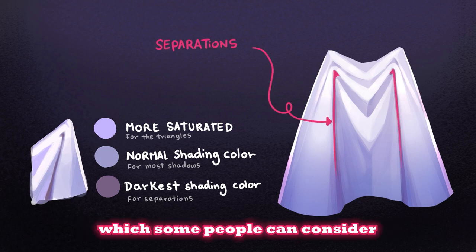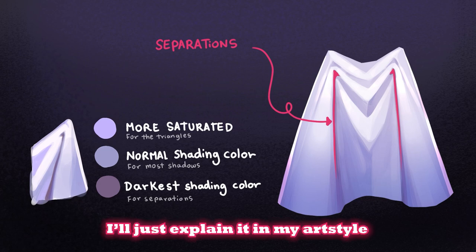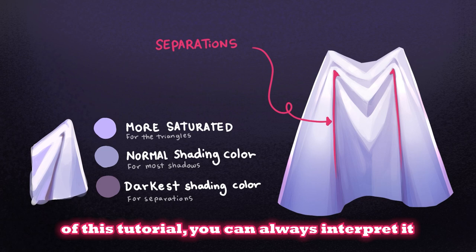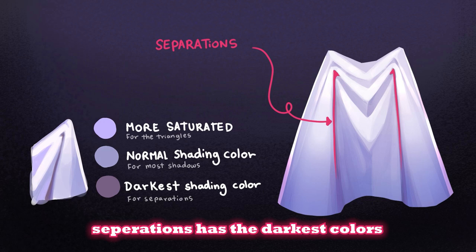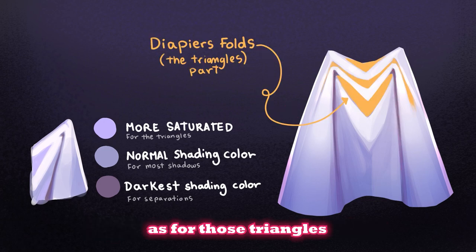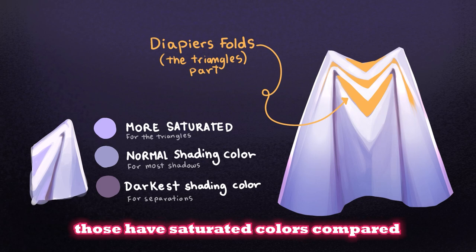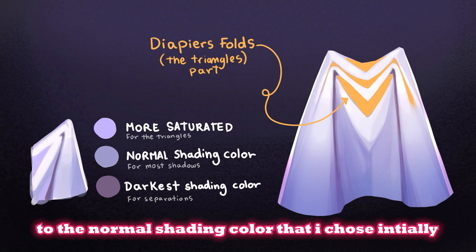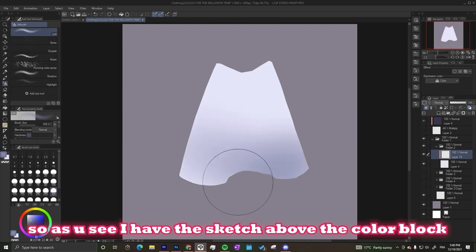I'll re-explain how I focus on separations, which some people consider line art, but in my art style it's a bit different. You don't have to follow every step — you can always interpret it in your own style. Separations have the darkest colors, and those triangles — sometimes called 'diaper folds' — have more saturated colors compared to the normal shading color I chose at the start.